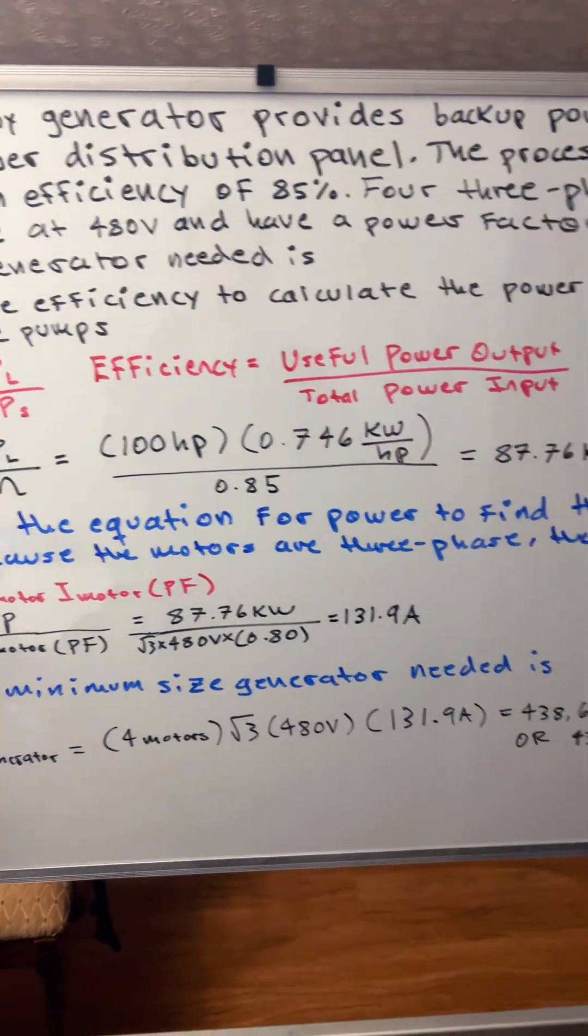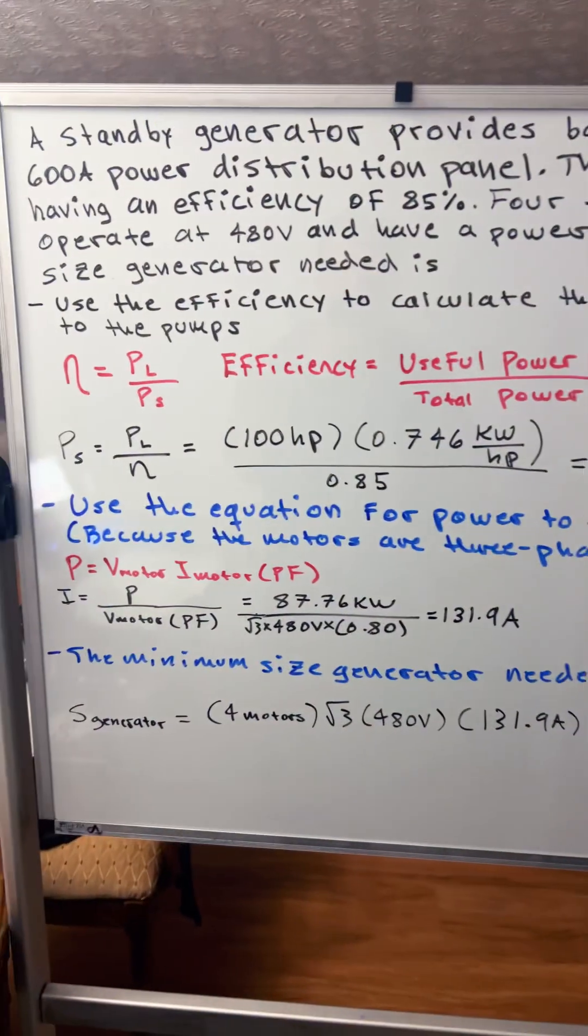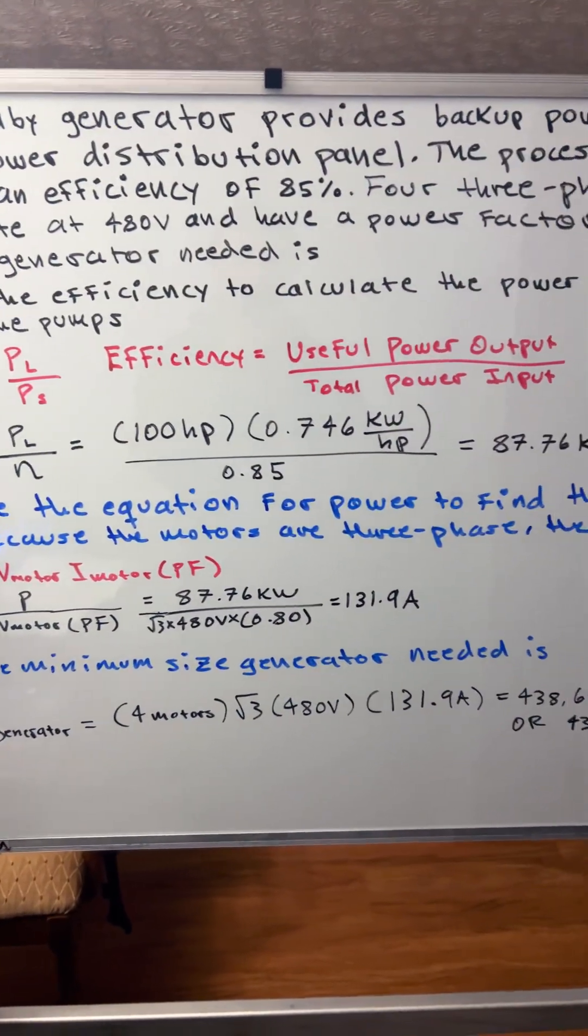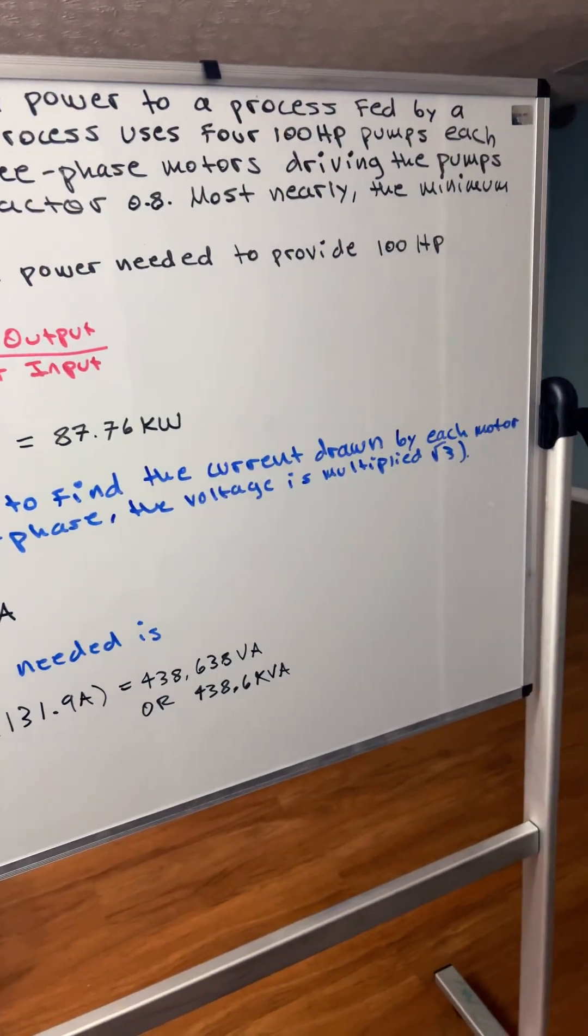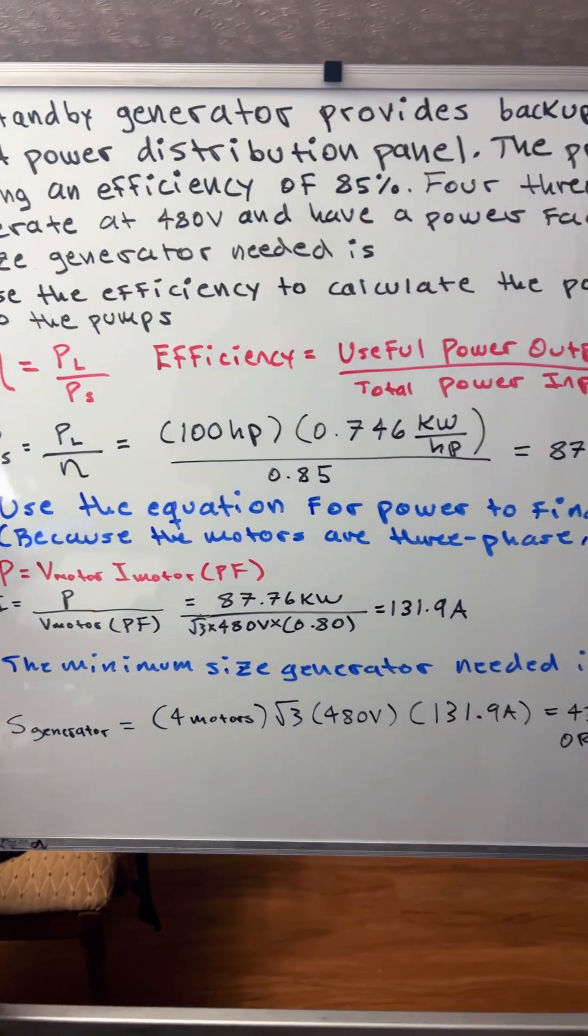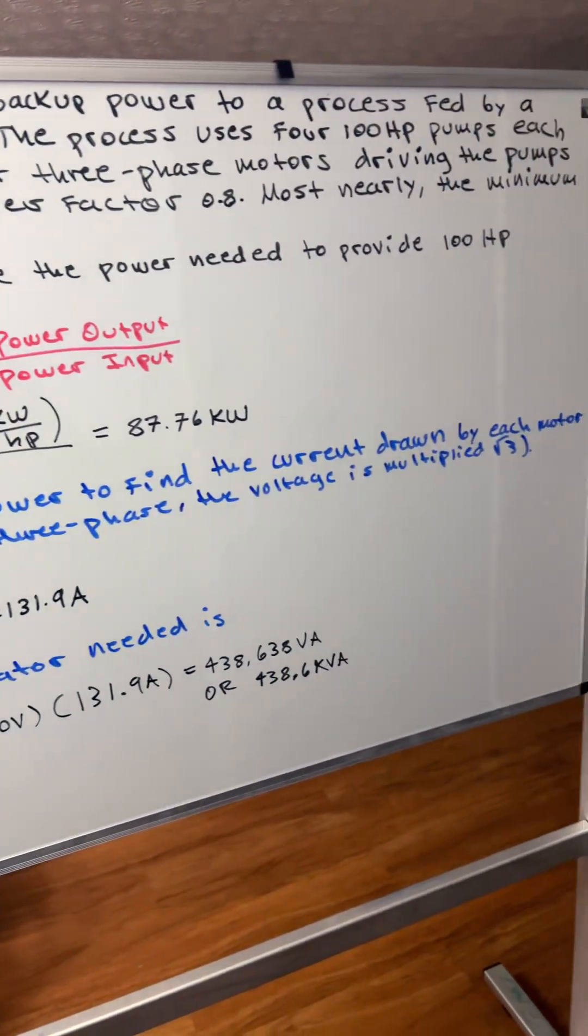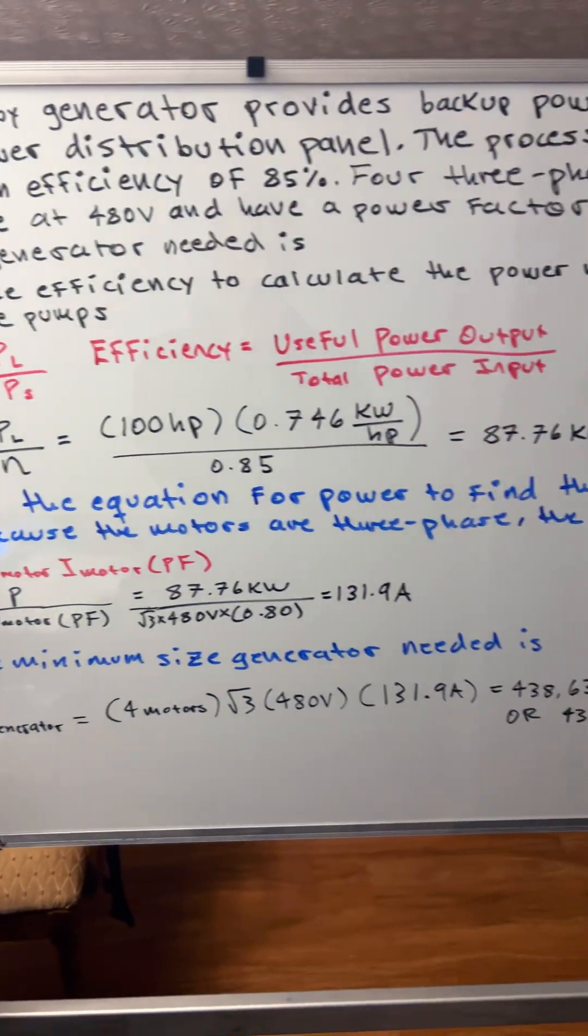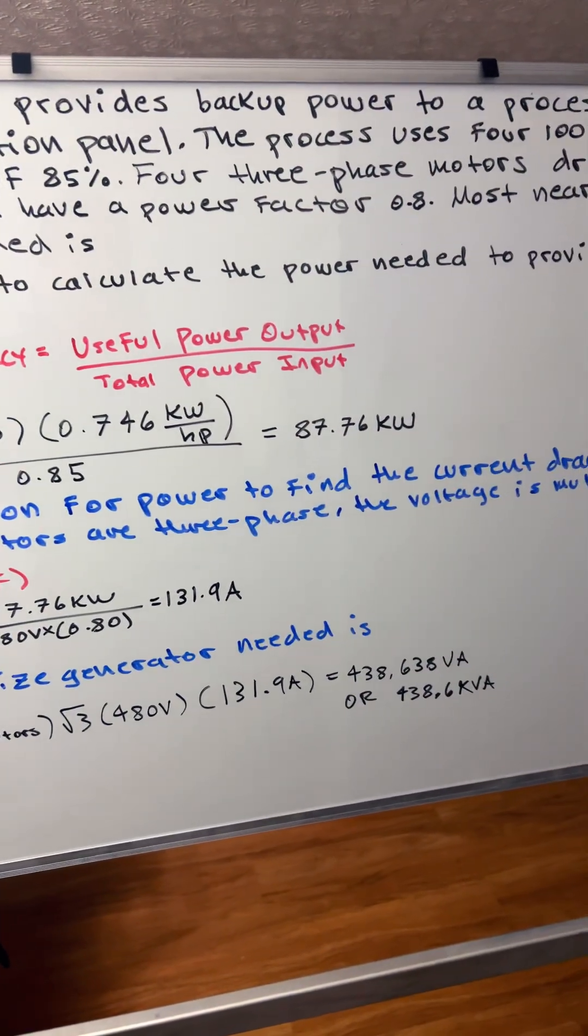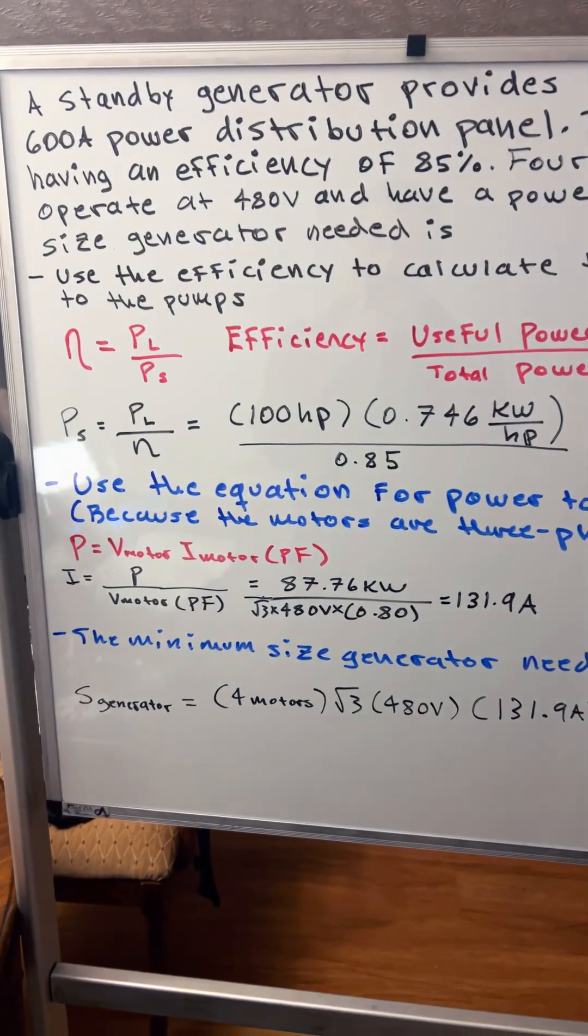A standby generator provides backup power to a process fed by a 600 amp power distribution panel. The process uses four 100 horsepower pumps, each having an efficiency of 85%. Four three-phase motors driving the pumps operate at 480 volts and have a power factor of 0.8. Most nearly, the minimum size generator needed is...